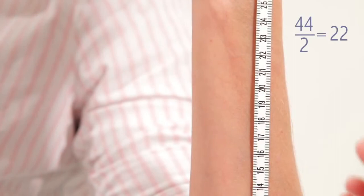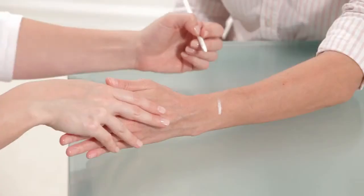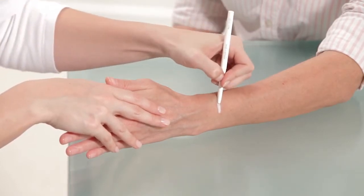At the halfway point, draw a mark. Extend the mark to make a line across the surface of the radius, covering half the diameter of the arm.